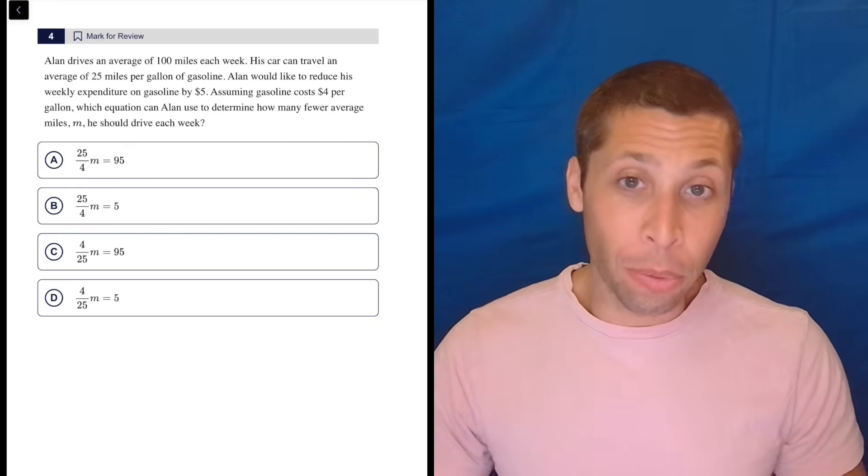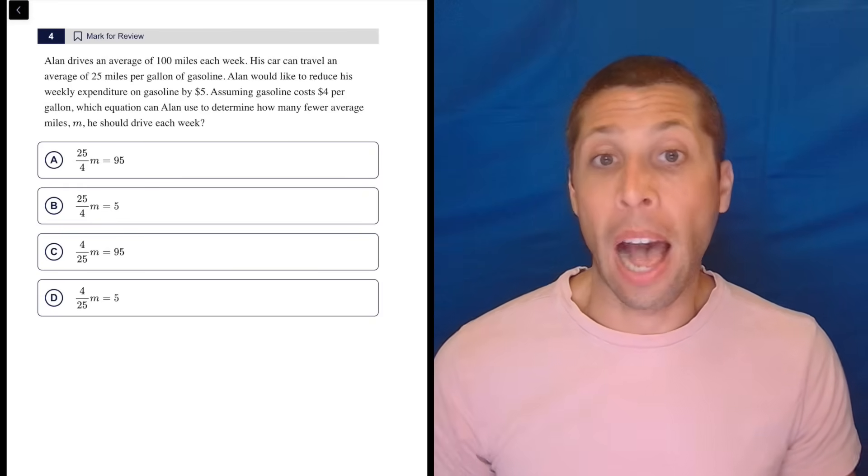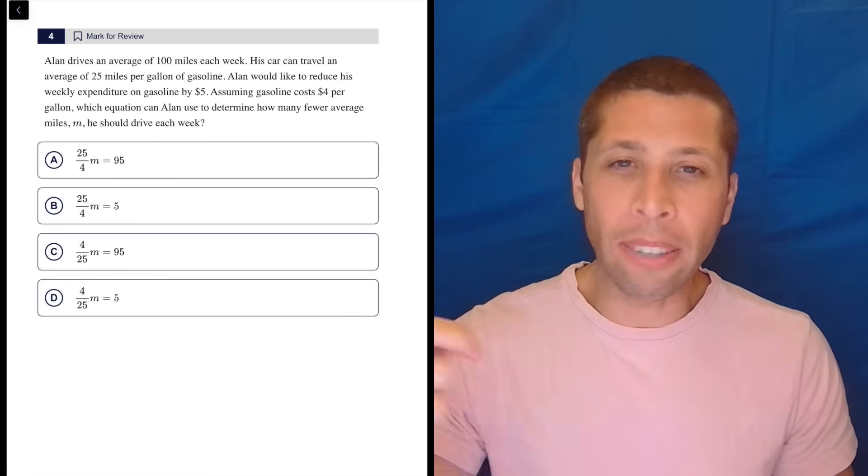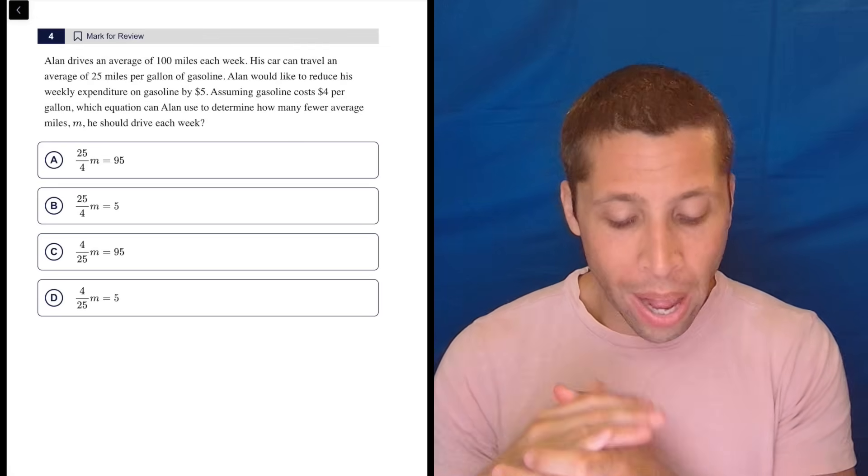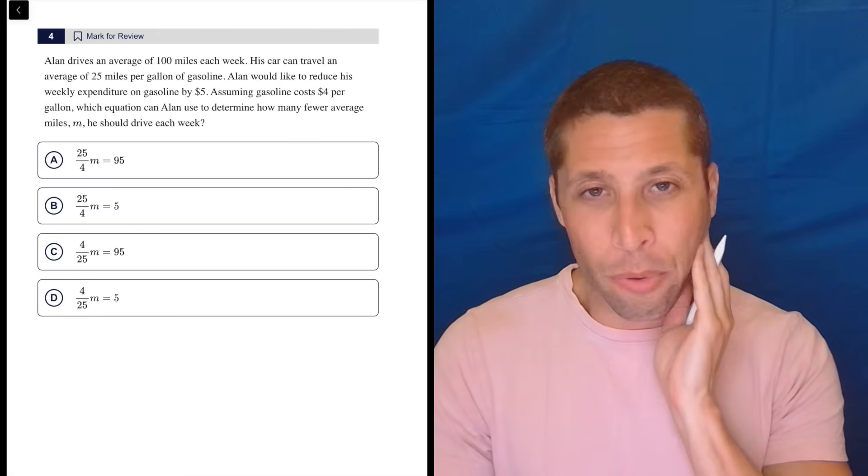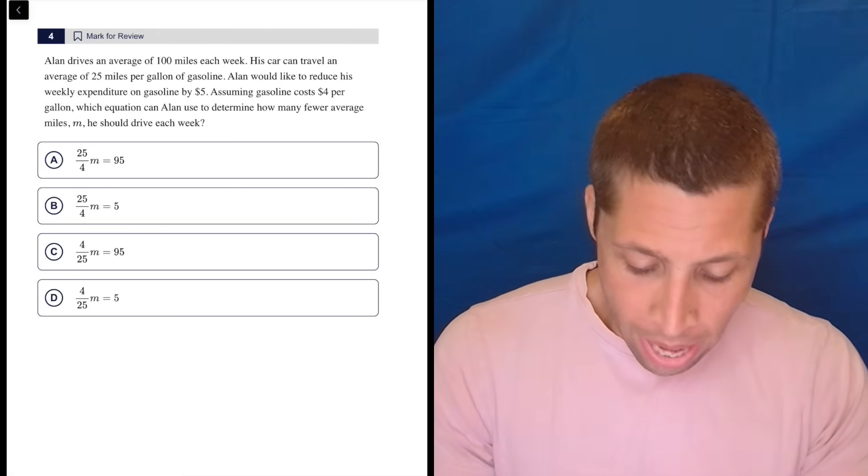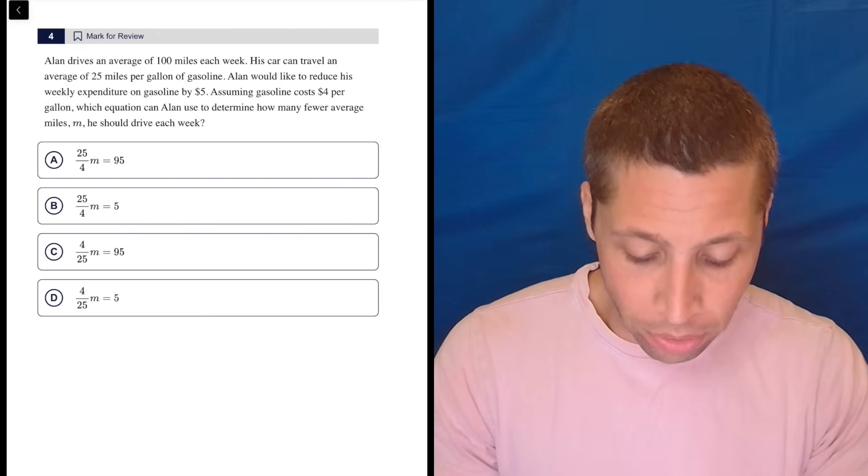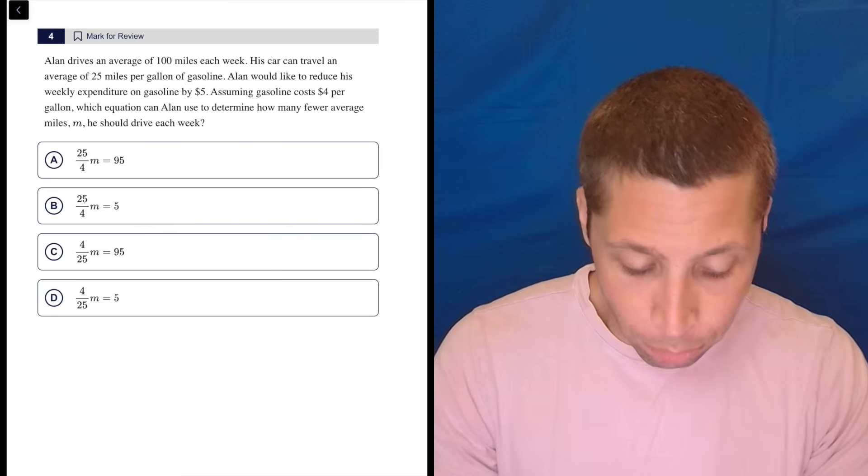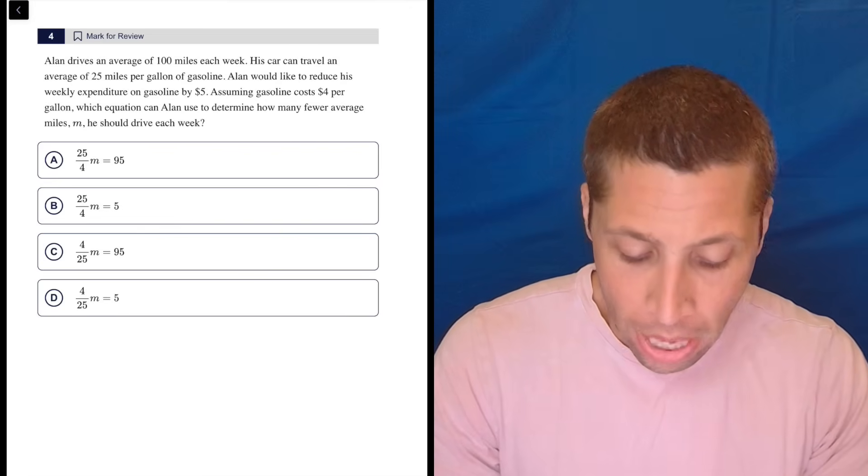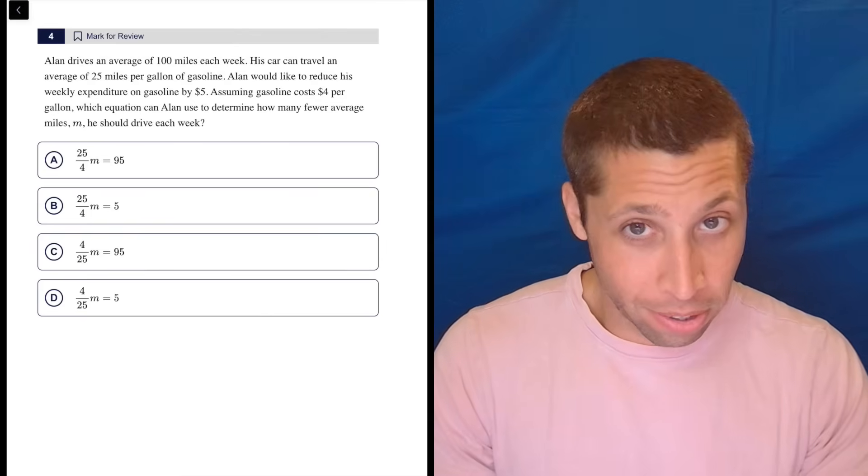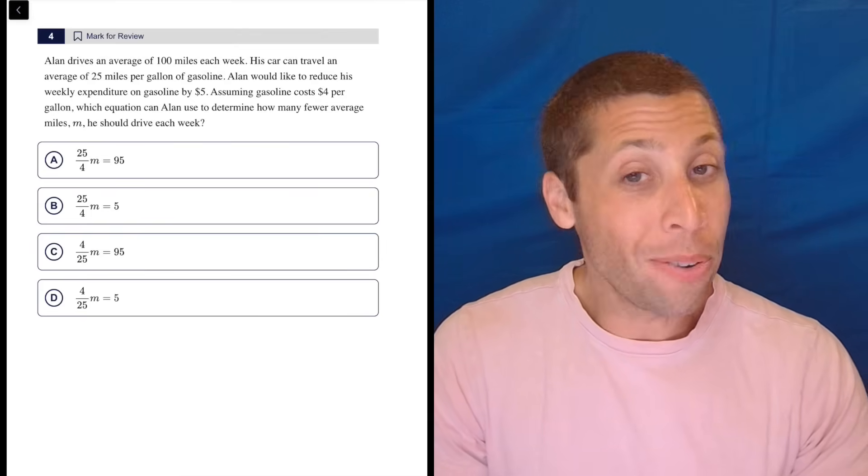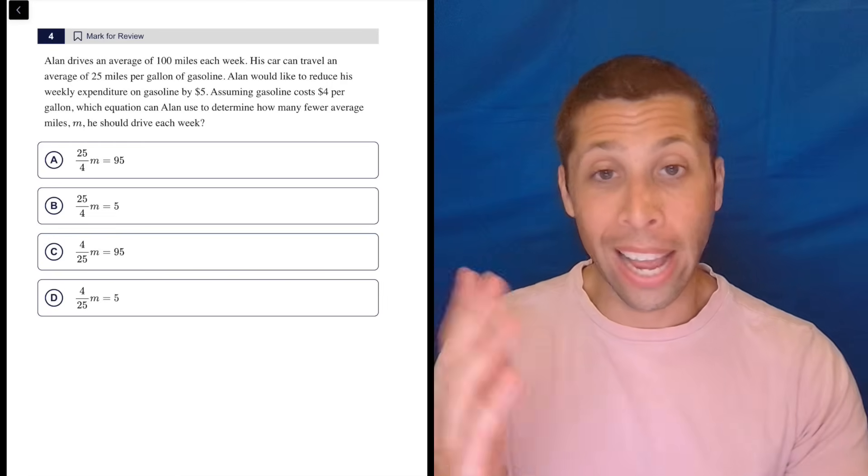Now, one thing that I try to do whenever I'm faced with a hard SAT question is I try to identify the topic because if I can identify the topic, that usually gives me a plan because the SAT is very repetitive. If I see certain kinds of questions, I'm going to do certain kinds of things. So as I'm reading this, I'll show you what I would pick up as maybe the topic to focus on. Alan drives an average of 100 miles each week. His car can travel on average of 25 miles per gallon of gasoline. Alan would like to reduce his weekly expenditure on gasoline by $5, assuming gasoline costs $4 per gallon, which equation can Alan use to determine how many fewer average miles M he should drive each week. There's a lot of units in this question. So I might want to just think of it as a unit conversion question. And I have a method for that.